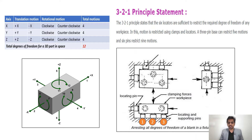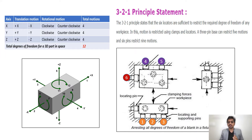We place 3 locating pins on one surface, 2 pins on another surface, and 1 on a third surface. These three surfaces are mutually perpendicular to each other. Using these 6 pins, we can restrict 9 motions, and the remaining motions can be restricted with the help of clamping devices. This is how we locate a part — a basic principle to keep in mind while designing a fixture.